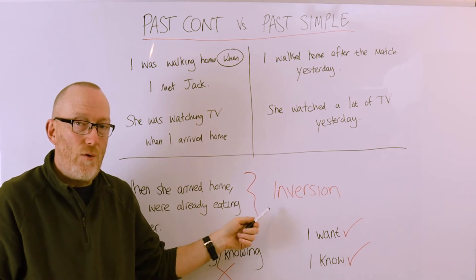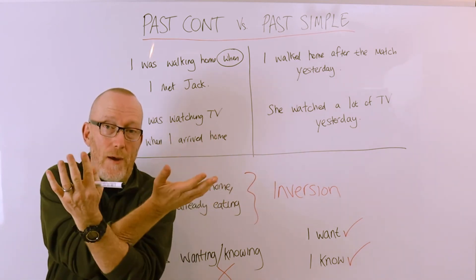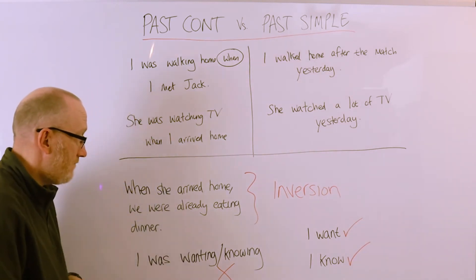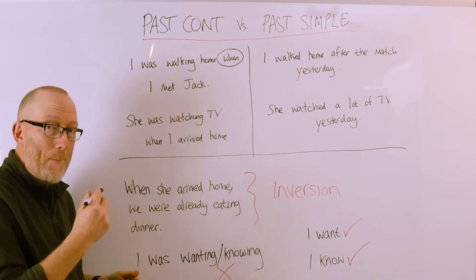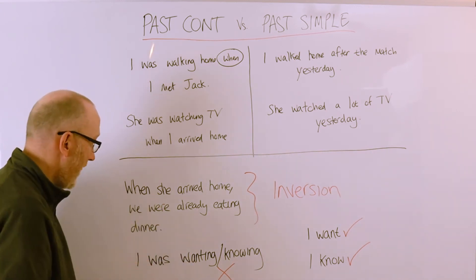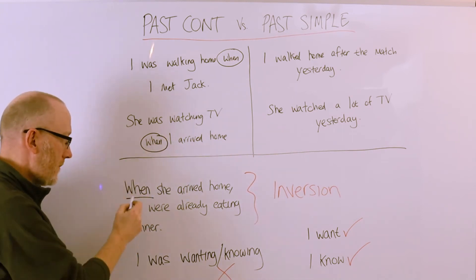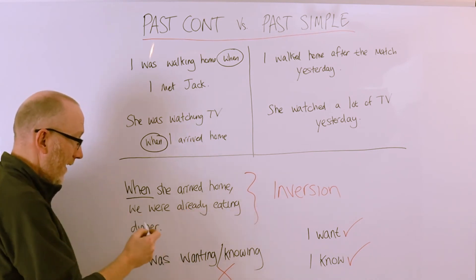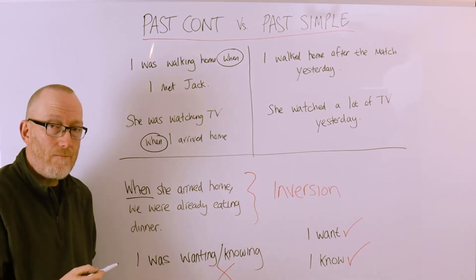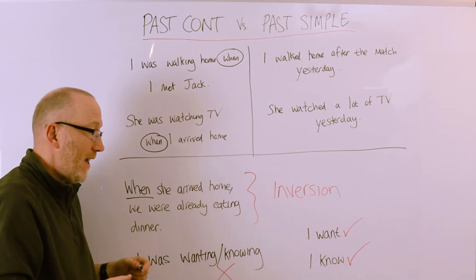Now let me introduce you to a thing called inversion. Inversion just means taking two components and swapping around the order. So we have a sentence that is past continuous plus past simple, but we've changed the order of the information. Instead of having 'when' in the center, 'when' is at the beginning of the sentence — for example: 'When she arrived home, we were already eating dinner.'